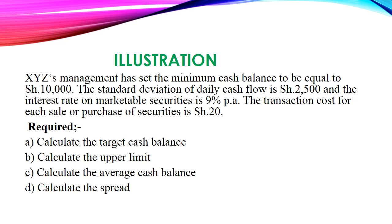Let's look at an illustration to help us understand the Miller-Orr model better. XYZ management has set the minimum cash balance to be 10,000 shillings. The standard deviation of daily cash flow is 2,500 shillings, and the interest rate on marketable securities is 9% per annum. The transaction cost for each sale or purchase of securities is 20 shillings. You are required to: (a) calculate the target cash balance, (b) calculate the upper limit, (c) calculate the average cash balance, and (d) calculate the spread.